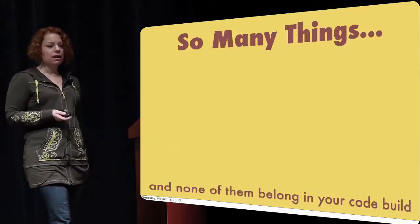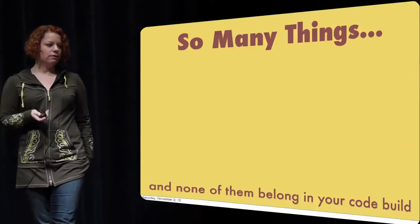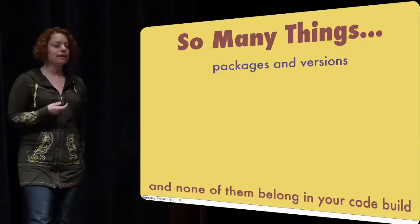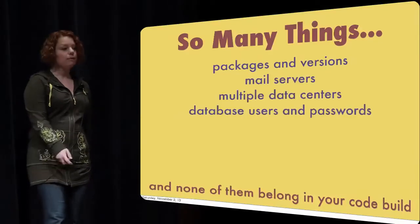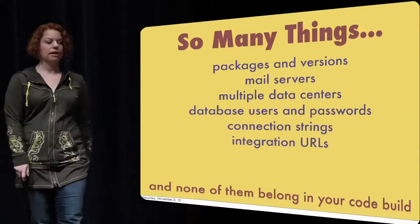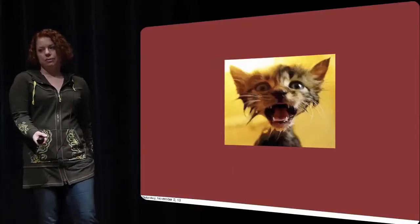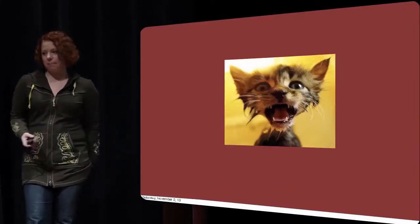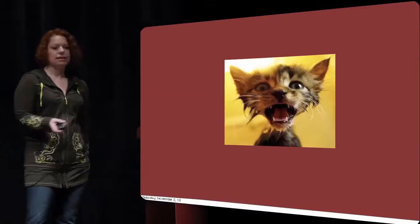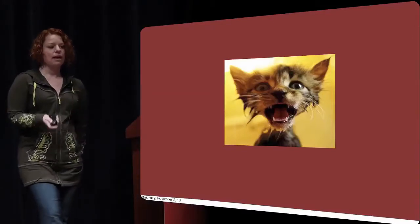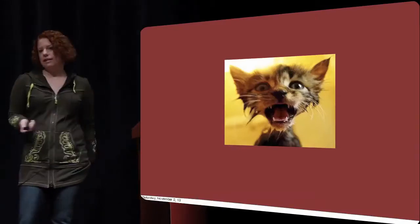There are so many things in your environments that are not code. A lot of times what we find is that people are putting integration information and other stuff right into the code base — and we want to avoid that. None of these things belong in your build: packages and versions, mail server information, multiple data center information, database users and passwords, connection strings, integration URLs, deployments, batch jobs. These things should never be in your code base. You shouldn't have to rebuild your app because somebody changed a database password or connection string.